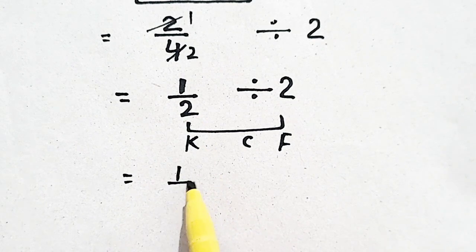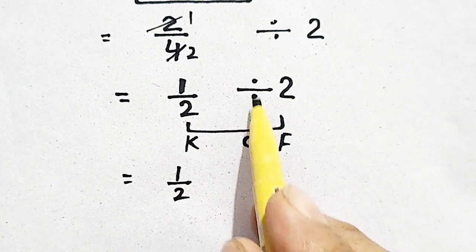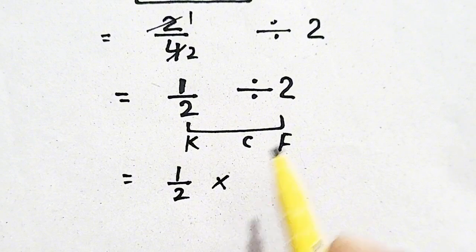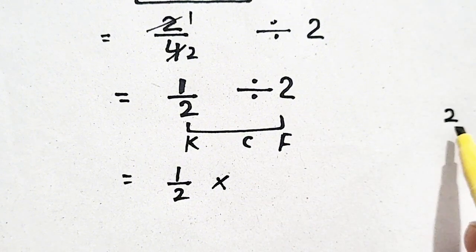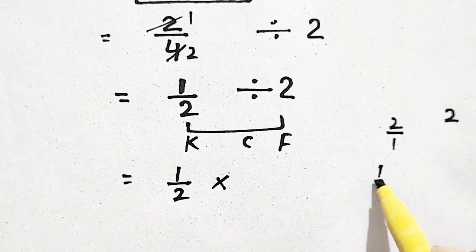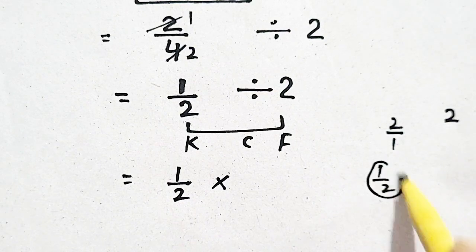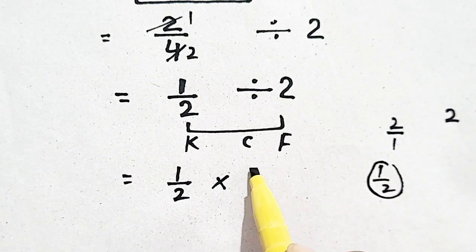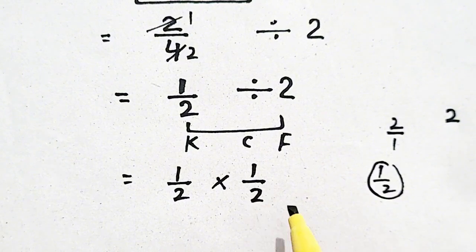1 by 2 is kept as it is. C means change, divide is changed into multiplication. So 2 can be written as 2 by 1. When we flip it, we will get 1 by 2.